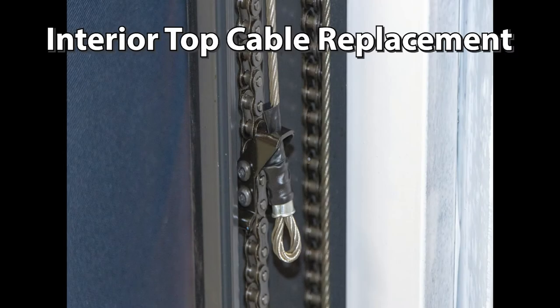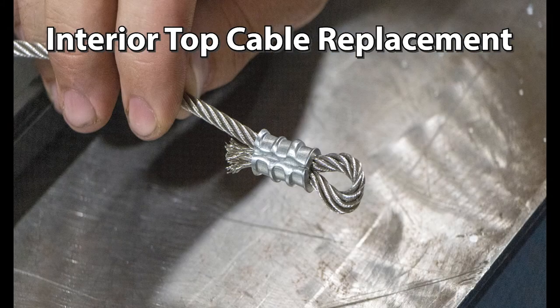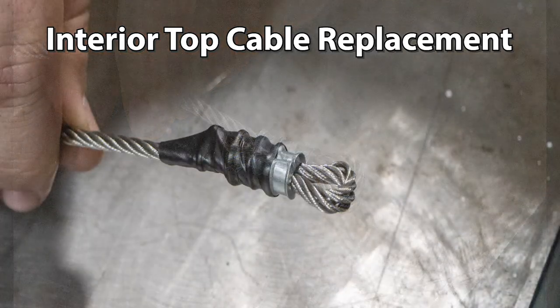To change the interior top cable you're going to follow the same procedures as changing the interior of your bottom cable, but the only difference is the way you crimp the end. And this is the result we're looking for.